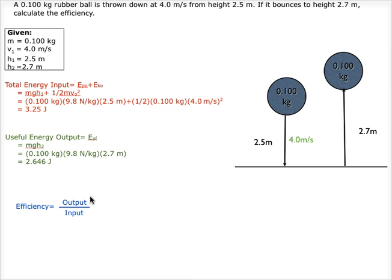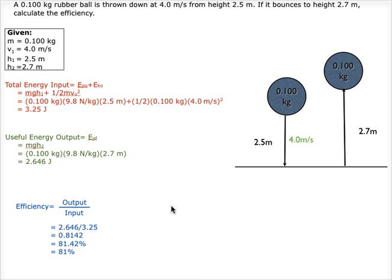We then calculate efficiency, which is useful energy output divided by total energy input. So that's 2.646 joules divided by 3.25 joules, which equals 0.8142, or 81.42%, or just 81% in correct significant digits.